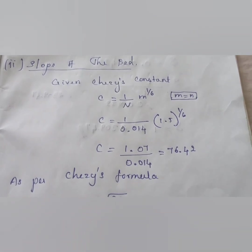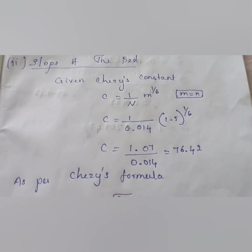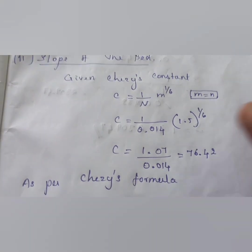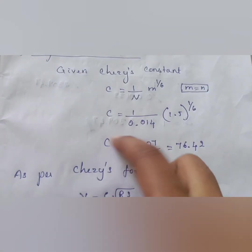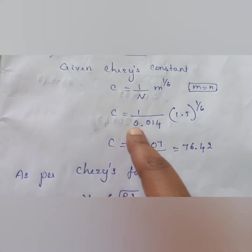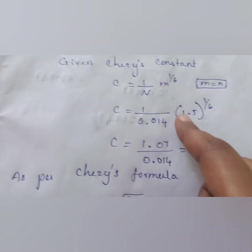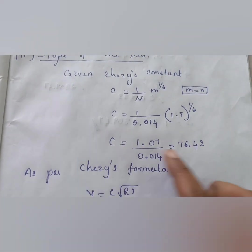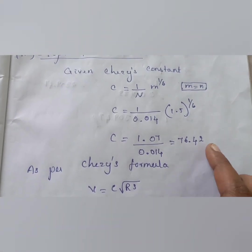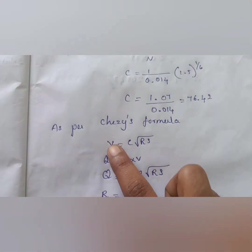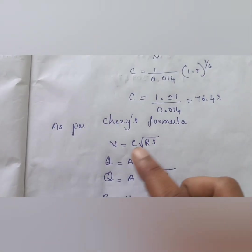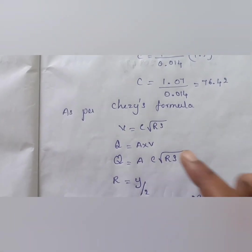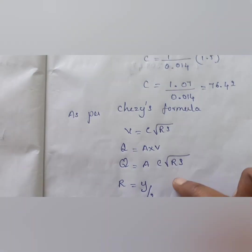Using Chezy's formula, C = (1/n) × m^(1/6), where Manning's constant n = 0.014 and m = R = hydraulic radius. Substituting: C = (1/0.014) × 1.5^(1/6). The Chezy's constant C = 76.42. The formula is v = C × √(RS), and Q = A × C × √(RS).